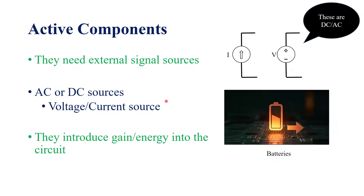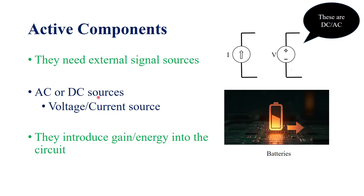There are two types of components. One is called active components and the other is a passive component. Active components are generally those which need an external signal source in order for them to function. If the components or devices have to work, they generally need an external signal source. Those signal sources could be a voltage source or a current source, and these signal sources are either DC or AC in nature. AC or DC sources can be used to power active devices or active components.